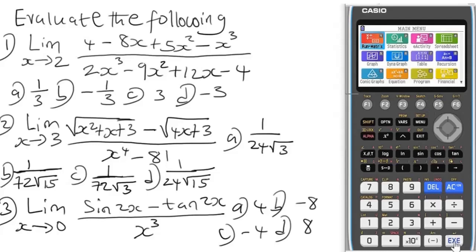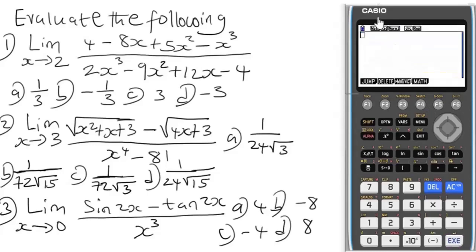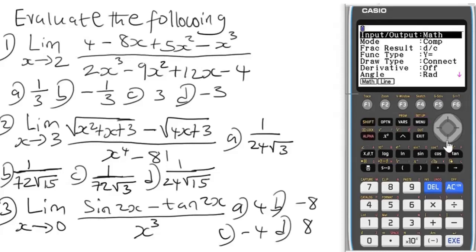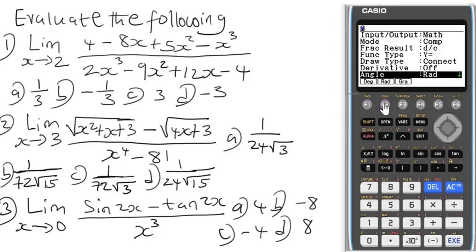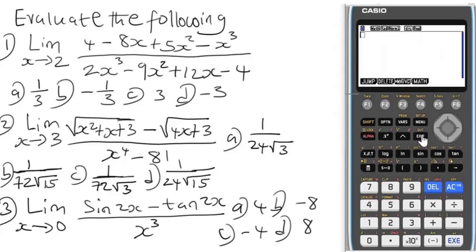By default the calculator is in Radians mode — we're safe to proceed. However, if your calculator is in Degree mode, be aware: for limits not involving angles, degree mode doesn't matter. But when the question involves angles like sin, cos, or tan, you must switch to Radians mode to get the correct answer. To switch, press the angle settings and press F2 to set Radians mode.